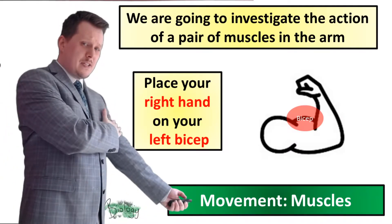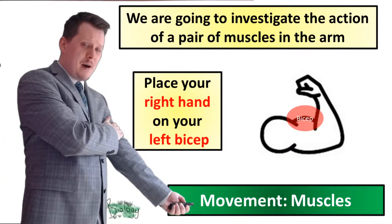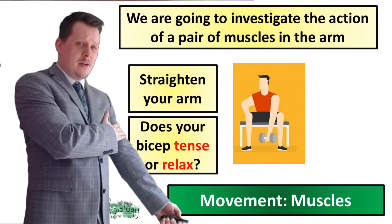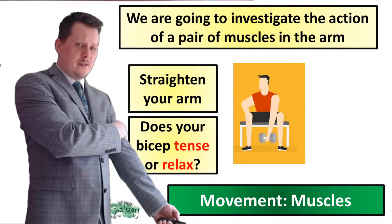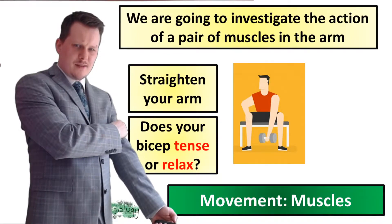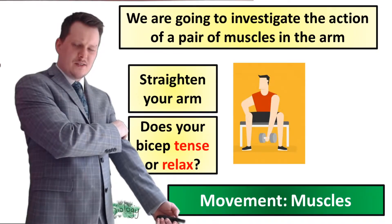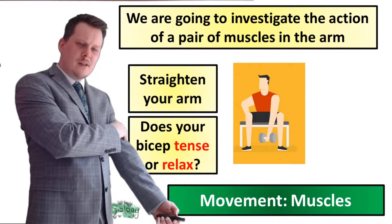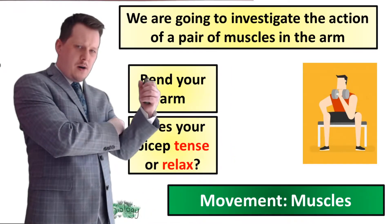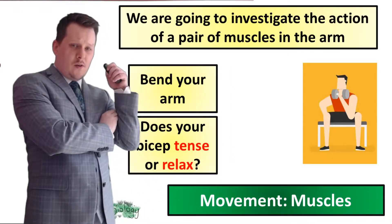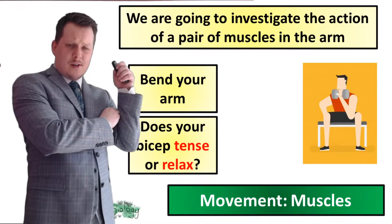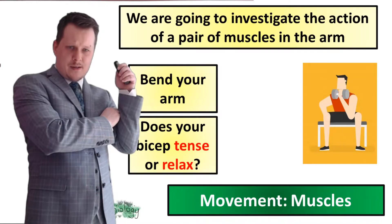Take your right hand and place it on your left bicep. With the left arm straight, feel the bicep — does it feel tense and hard, or relaxed and soft? It feels relaxed and soft. Then bend your arm all the way up. Does the bicep still feel relaxed and soft, or has it become tense and hard now? It's tensed.